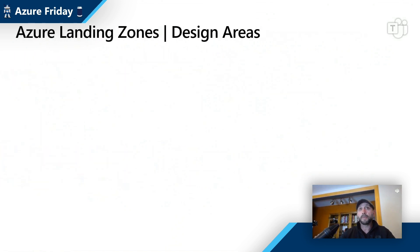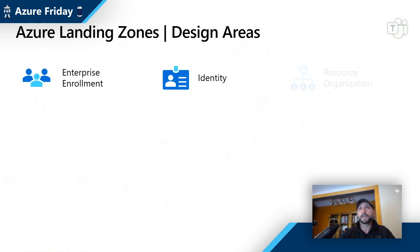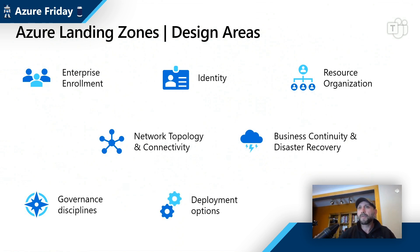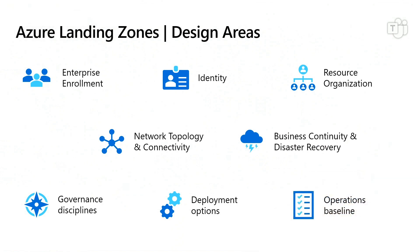We do that by taking care of a couple of key design areas: how are you enrolling your enterprise, how do you set up identity, how do you tackle management groups and resource groups through resource organization, how do you connect your network topology and connect it back to on-prem, have you considered operational baselines and business continuity and disaster recovery, and have you implemented the governance disciplines to meet compliance requirements? And ultimately, what deployment option do you use to push this out so people can use a self-service environment or one you've prepared for them?